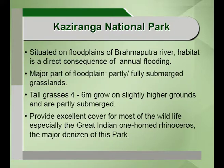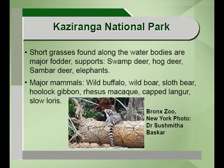Kaziranga National Park is situated on the floodplains of the Brahmaputra River in India. This habitat is a direct consequence of annual flooding and is a nature reserve. Major parts of the floodplain have partly or fully submerged grasslands with tall and short grasses. Tall grasses grow 4 to 6 meters high on slightly higher and partly submerged grounds, providing excellent cover for the great Indian one-horned rhinoceros — an endangered species. Short grasses found along water bodies are major fodder supporting swamp deer, hog deer, sambar deer, and elephants.